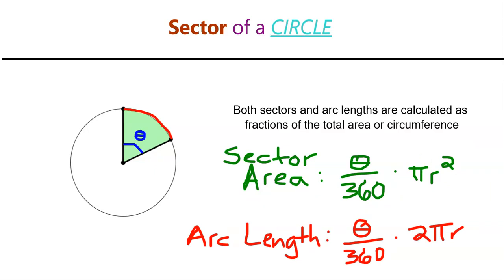If we have a central angle that we designate as theta, that is another Greek letter that is used as a variable very frequently when we're talking about angles both in geometry and algebra, calculus, and beyond. The area of a sector is theta over 360 times the area formula, and the arc length is theta over 360 times the circumference formula. That theta over 360 just tells us what fraction of the circle the sector is taking up or what fraction of the circumference the arc length represents.